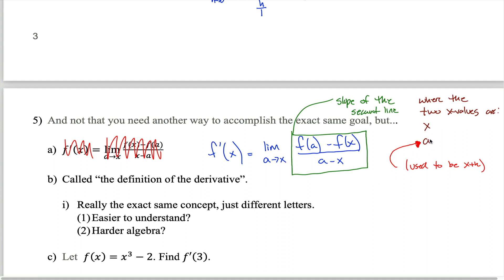How would that work if these were your two different x values? Remember, the slope of the secant line is the change in y over the change in x: m equals y2 minus y1 divided by x2 minus x1. If I call x1 the letter x and x2 the letter a, then my denominator should be a minus x. My numerator should be y2 minus y1, where y2 is f of a and y1 is f of x.